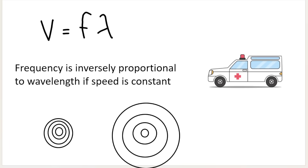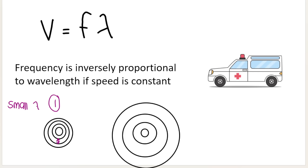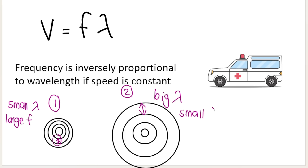I know my drawings are a little wonky, but remember the distance between the crests is the wavelength. Sound source one has a much smaller wavelength than sound source two. So sound source one will have a large frequency and sound source two will have a small frequency. It's very important to understand this inversely proportional relationship.